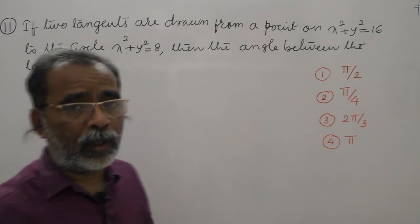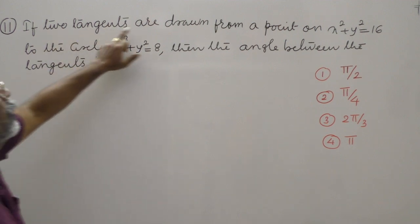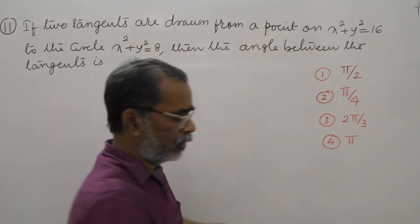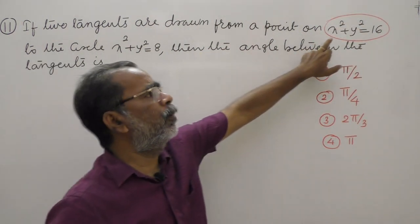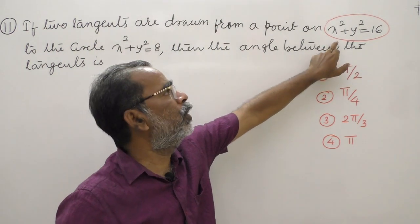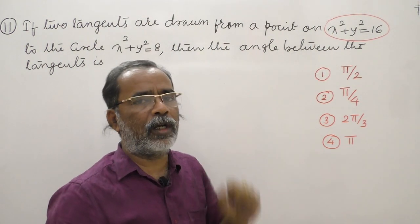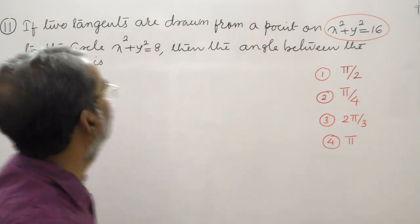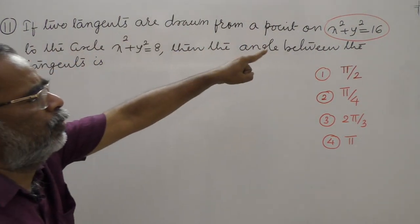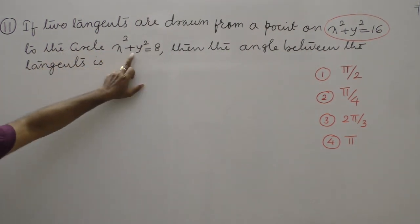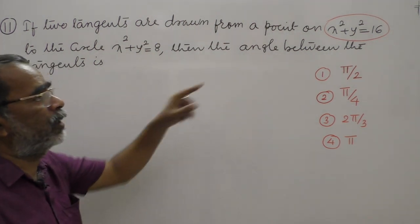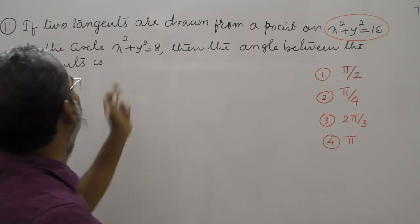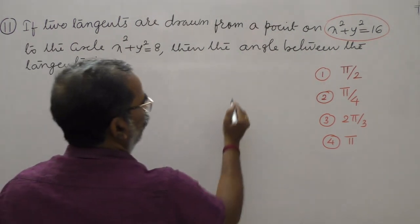Question number eleven: if two tangents are drawn from a point on the circle x squared plus y squared equals 16 to the circle x squared plus y squared equals 8, what is the angle between the tangents? Both circles are concentric with center 0 comma 0. The smaller circle has radius root 8 and the larger circle has radius 4 (root 16).